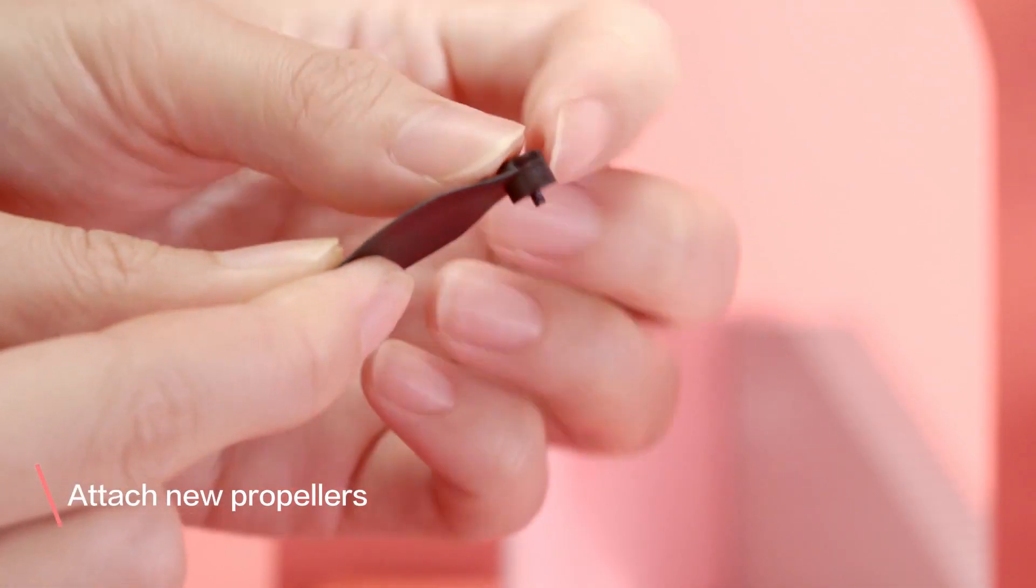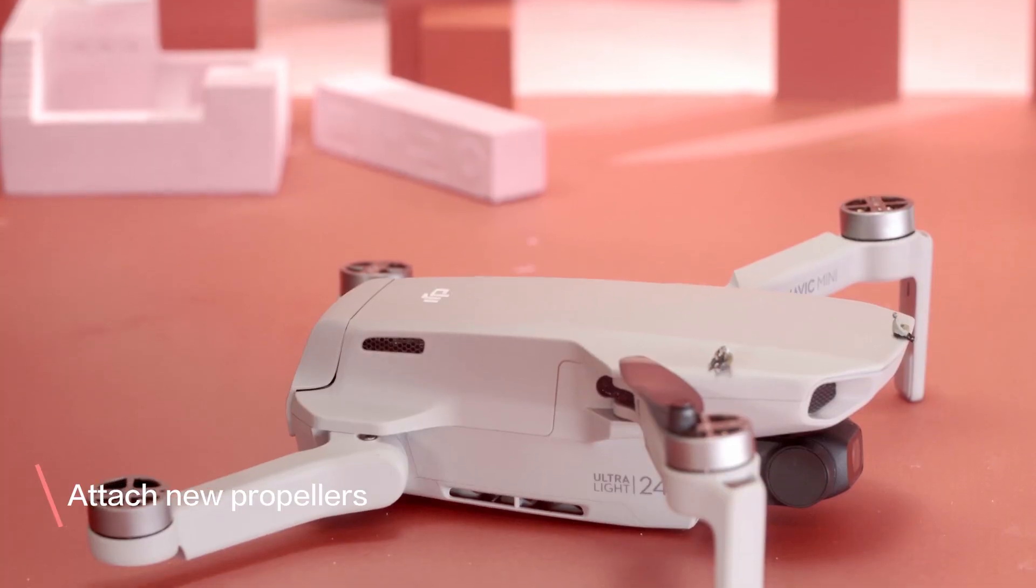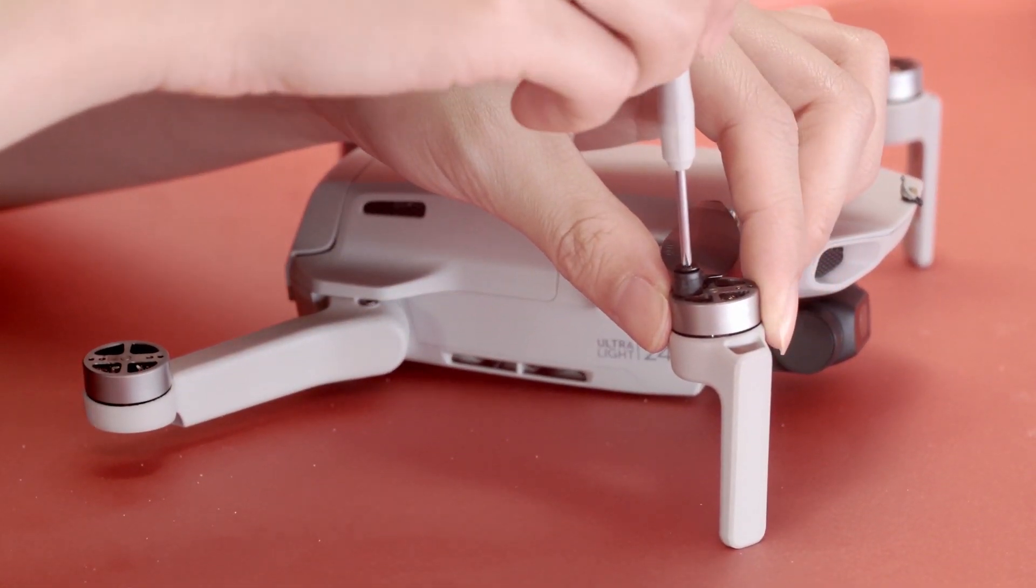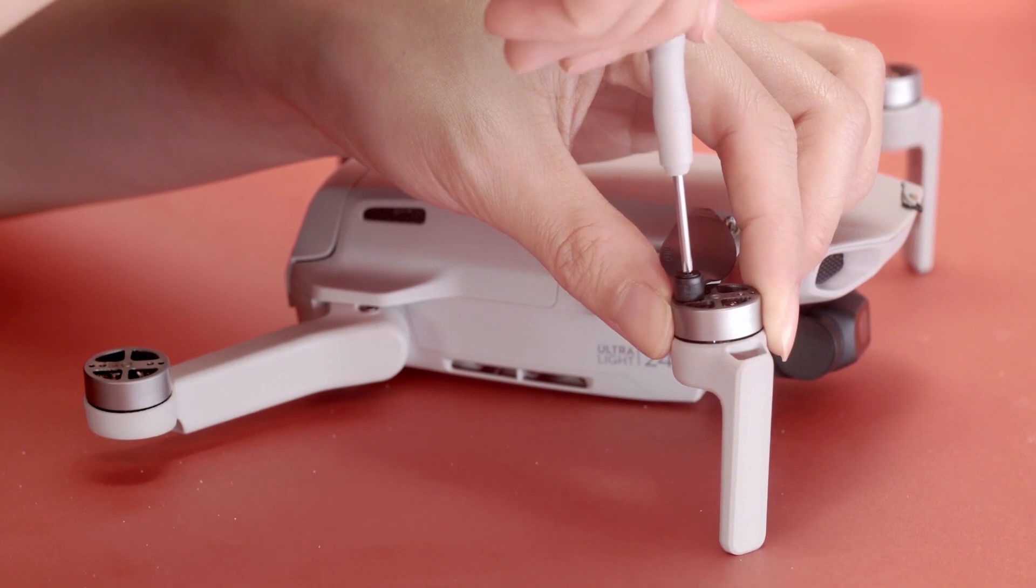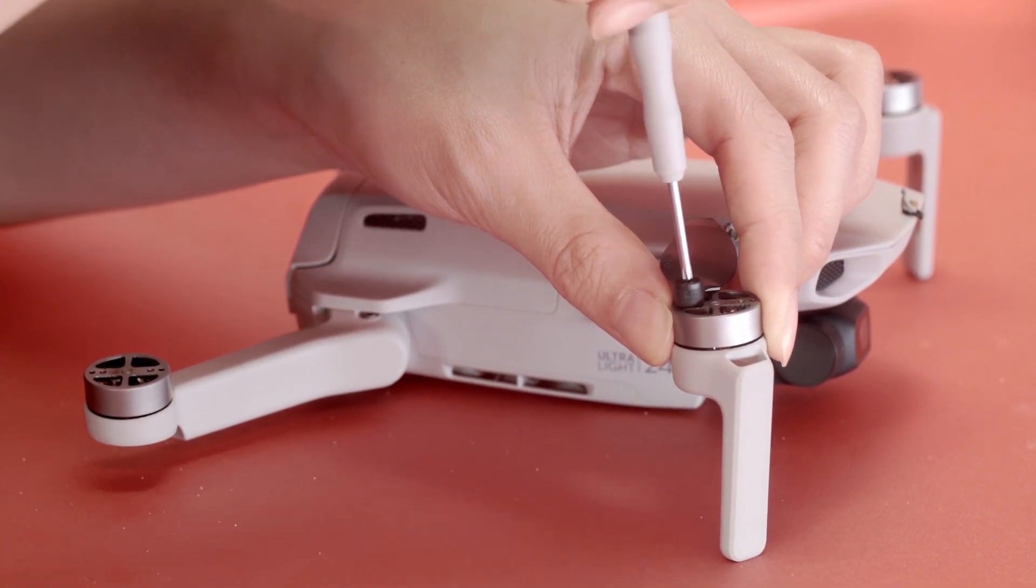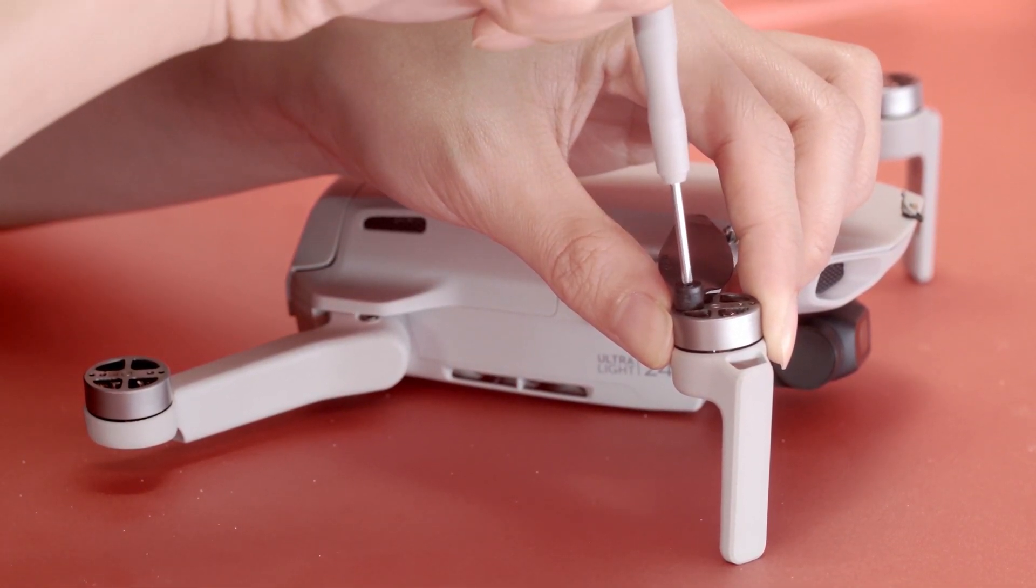Place the new screws into the screw holes of the propeller and insert the screwdriver into the screw's cross recesses. Align the screws properly and rotate the screwdriver clockwise until the screws are secure.